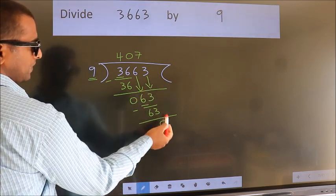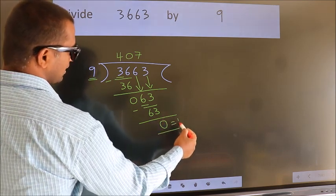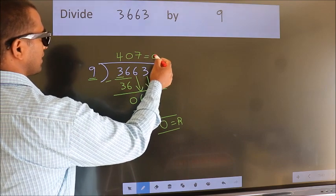No more numbers to bring it down. So we stop here. This is our remainder. This is our quotient.